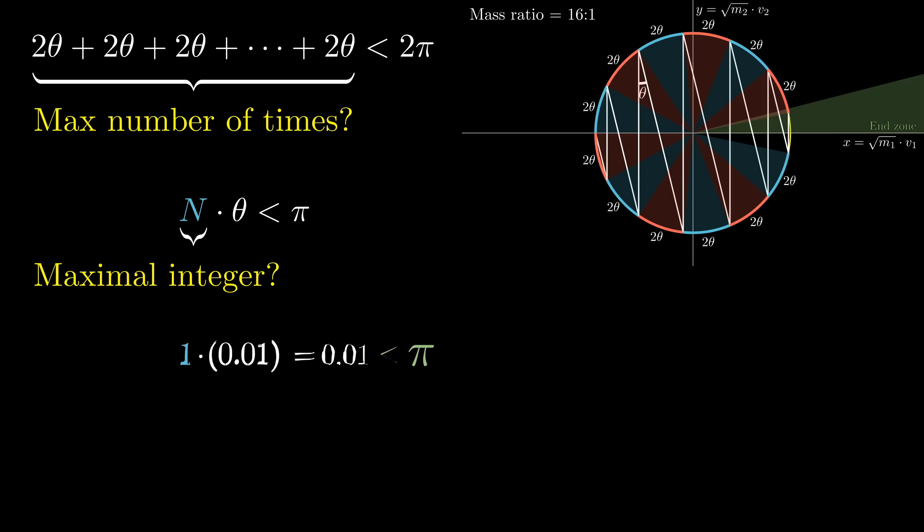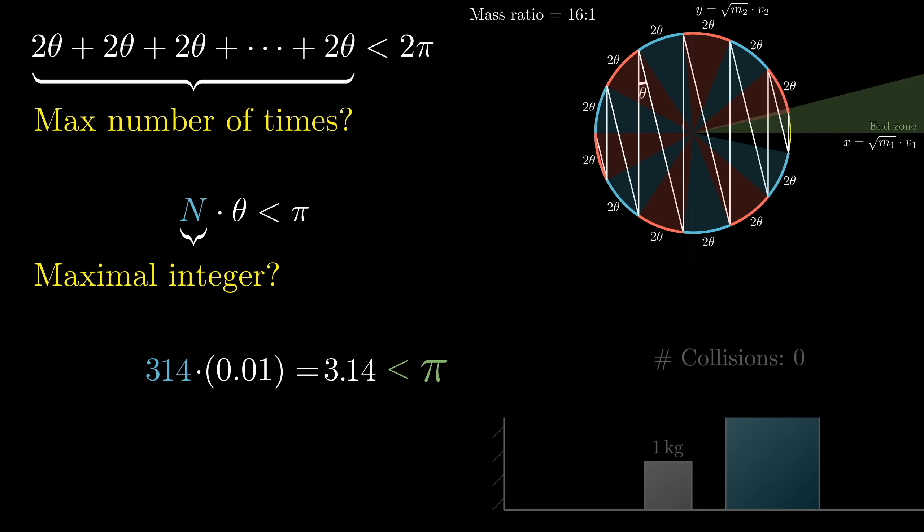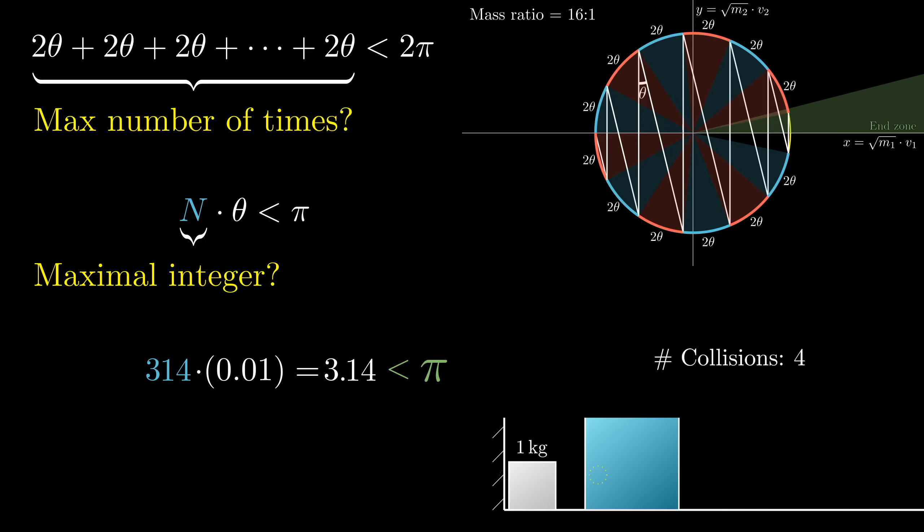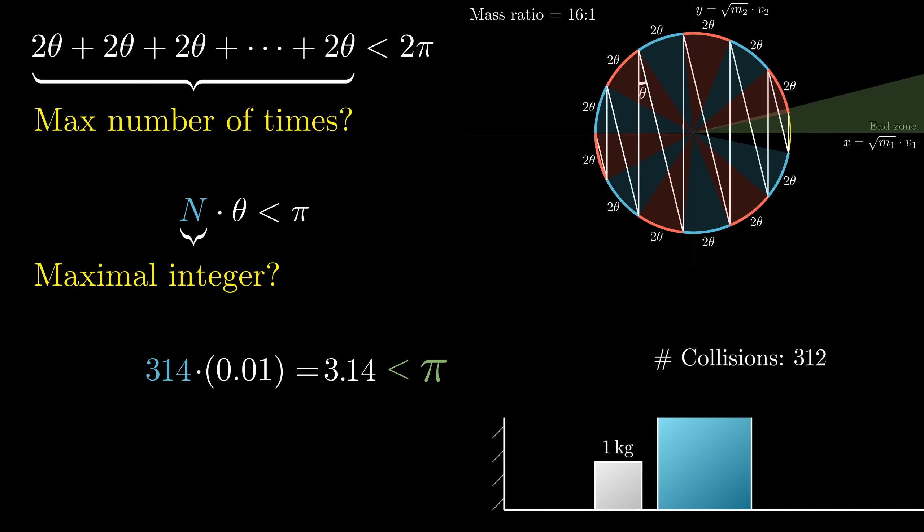For example, if theta was 0.01 radians, then multiplying it by as much as 314 would keep you below pi, but multiplying by 315 would bring you over that value. So the answer would be 314, meaning if our mass ratio was such that the angle theta in our diagram was 0.01, then the blocks would collide 314 times.